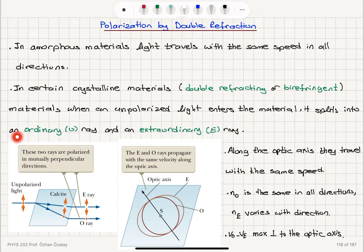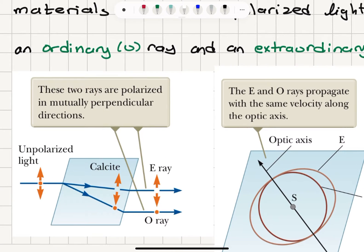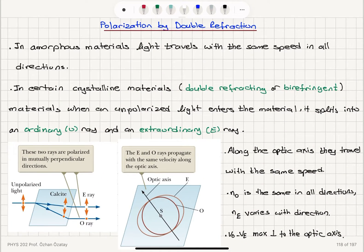When unpolarized light enters a birefringent material, it splits into an ordinary ray and an extraordinary ray. For example, in calcite, the unpolarized light enters and produces an extraordinary ray and an ordinary ray. These two rays have different indices of refraction and are polarized in mutually perpendicular directions.